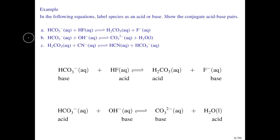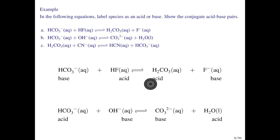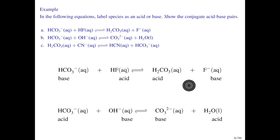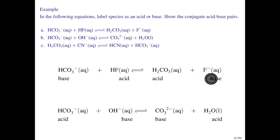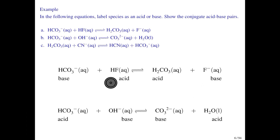Starting with part A, hydrofluoric acid donates a proton to hydrogen carbonate, leaving behind a fluoride ion and giving us carbonic acid. So on the reactant side, HF is the acid and the hydrogen carbonate ion is the base. On the other side, carbonic acid is the acid and fluoride is the base. The hydrogen carbonate ion is the conjugate base to carbonic acid, and fluoride is the conjugate base to hydrofluoric acid.